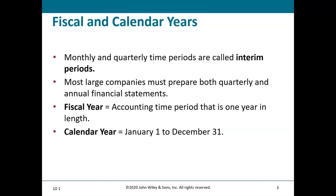Some companies use different time period lengths. For example, some do a 4-4-5 structure: the first period is four weeks, the second is four weeks, and the third period in a quarter is five weeks — giving thirteen weeks per quarter. Every once in a while they add an extra week or days to catch back up to the calendar, aiming for a more consistent basis year over year and quarter over quarter.